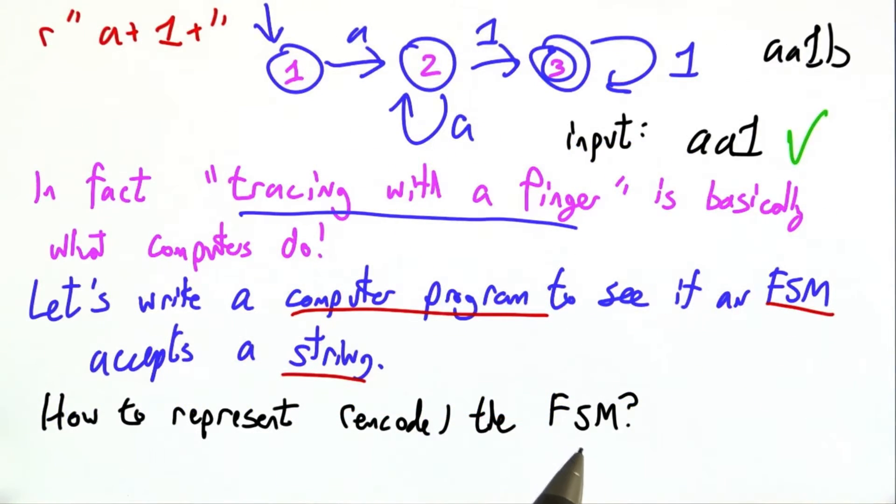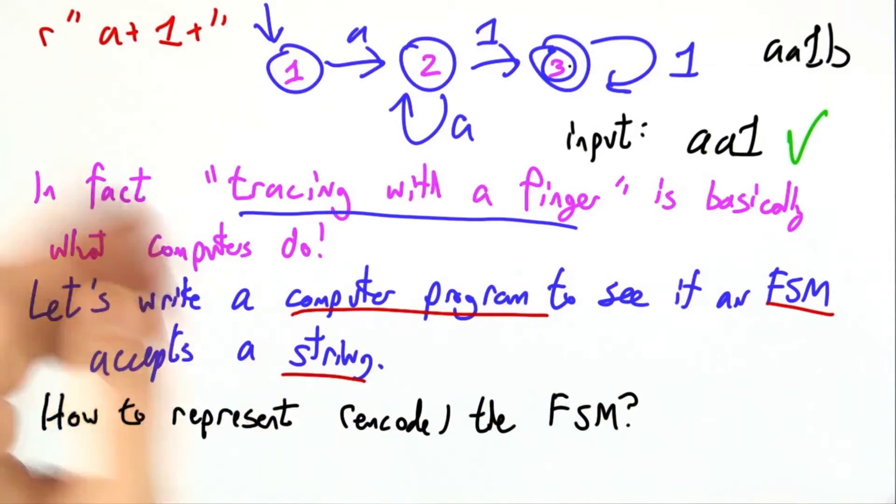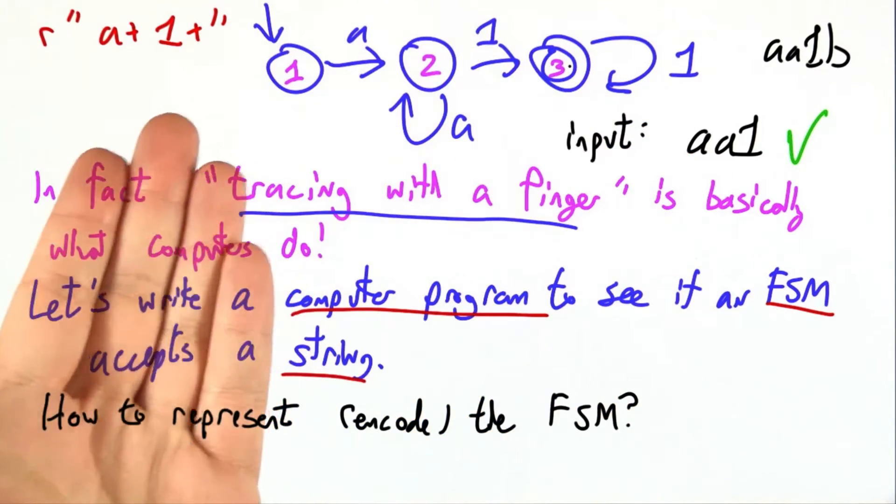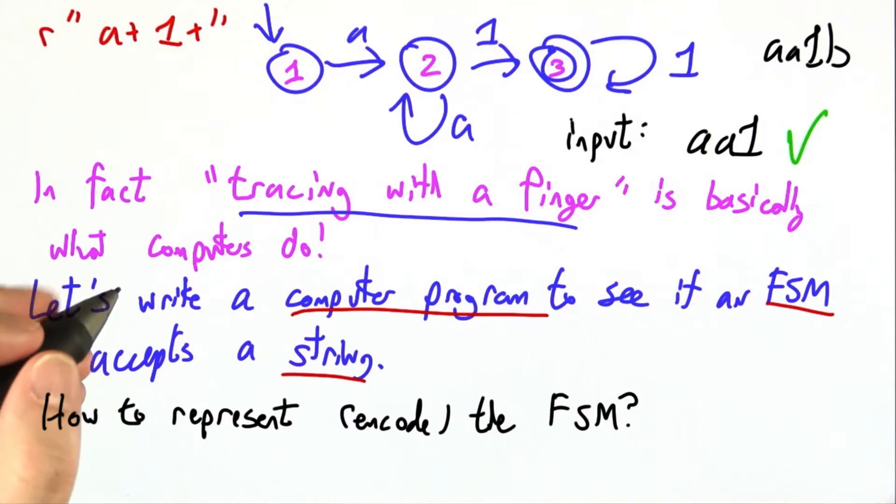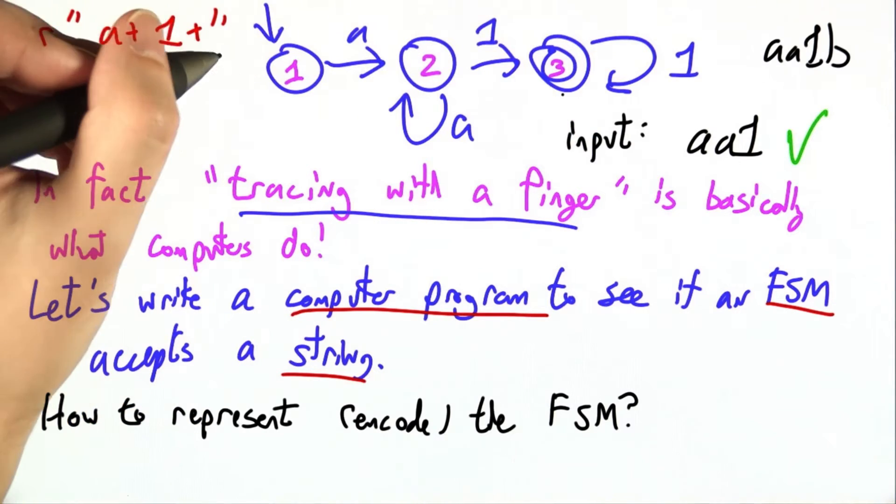But the first big design decision is, how do we represent this finite state machine? By now, we know how to pass a Python program a number or a string or a list, but how do I pass in a picture? Well, for the states 1, 2, 3, presumably I could just pass in a list of the states. It's these edges, these arrows that go anywhere. That's what really matters.